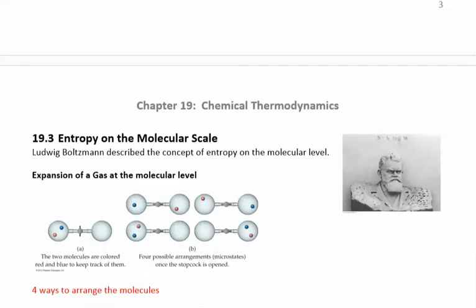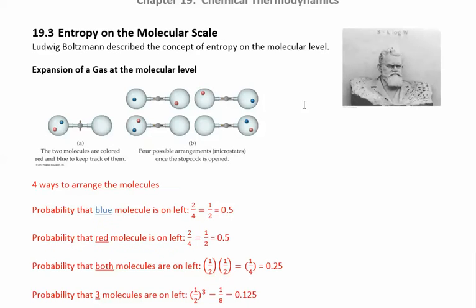Now we can move on to look at entropy on a molecular scale. This is a picture of Ludwig Boltzmann — he was a pioneer in this field. He came up with the concept of entropy at a molecular level and was really talking about microstates. He did a thought experiment: suppose you have two molecules and you can arrange them four different ways — blue here and red there, reversed, both on one side, or both on the other.